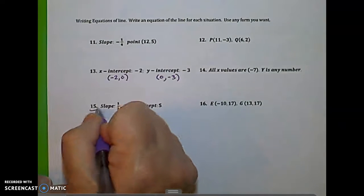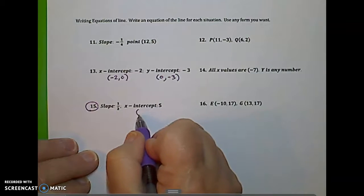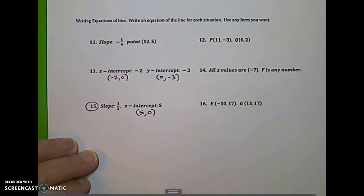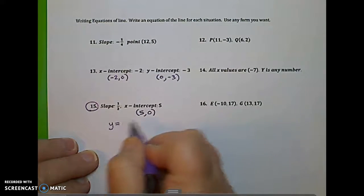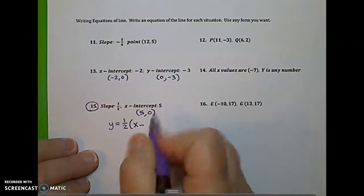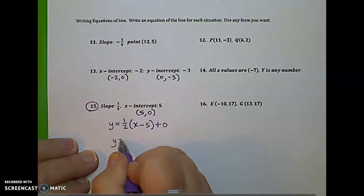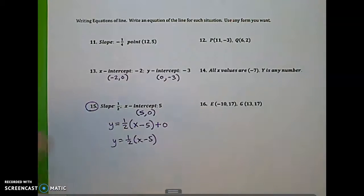Actually, let's do number 15. Our slope is one-half, and we have an x-intercept of 5. The x-intercept of 5 means the point 5, 0 is on the graph. So I'm going to use point-slope version. y equals the slope, one-half, times x minus the x-value, 5, plus the y-value, 0. So I can leave it just like this. If you wanted to, you could distribute the one-half, but there's really no need to. I would just leave it just like that.